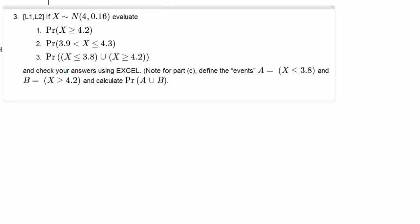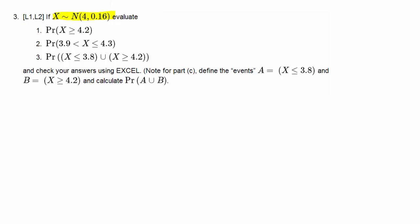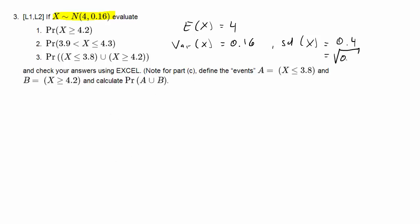Here are questions to calculate probabilities for a normal distribution that's not standard normal. We have a mean of 4 and a variance of 0.16 for the random variable x. That means the standard deviation is 0.4, because that's the square root of the variance 0.16.